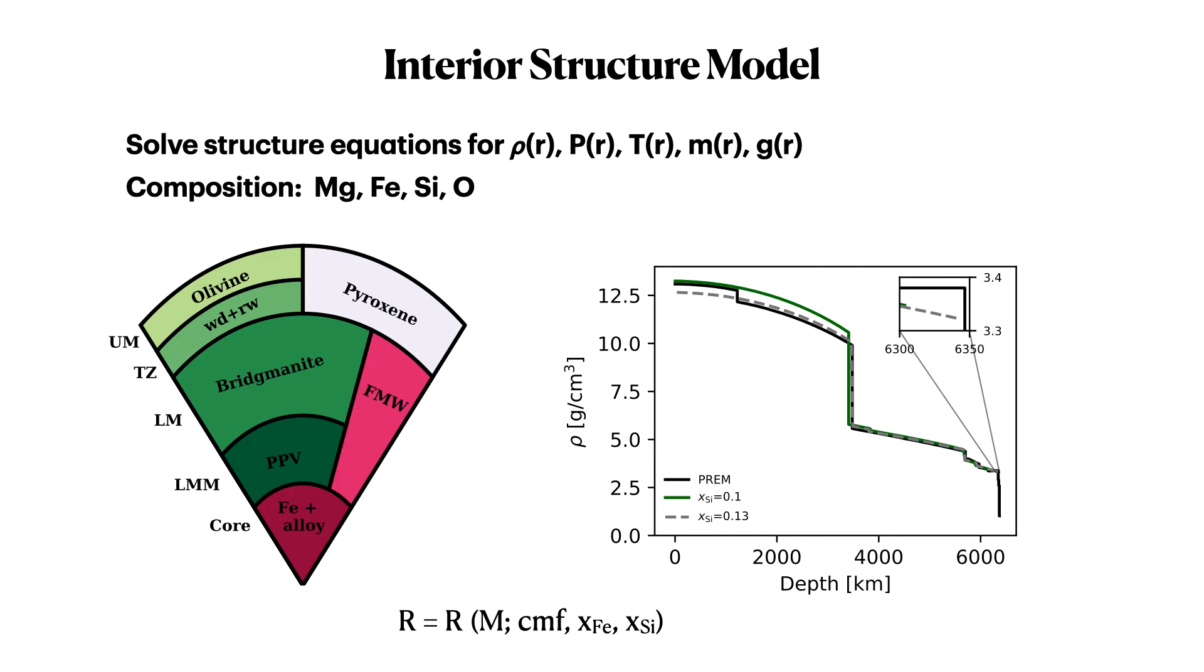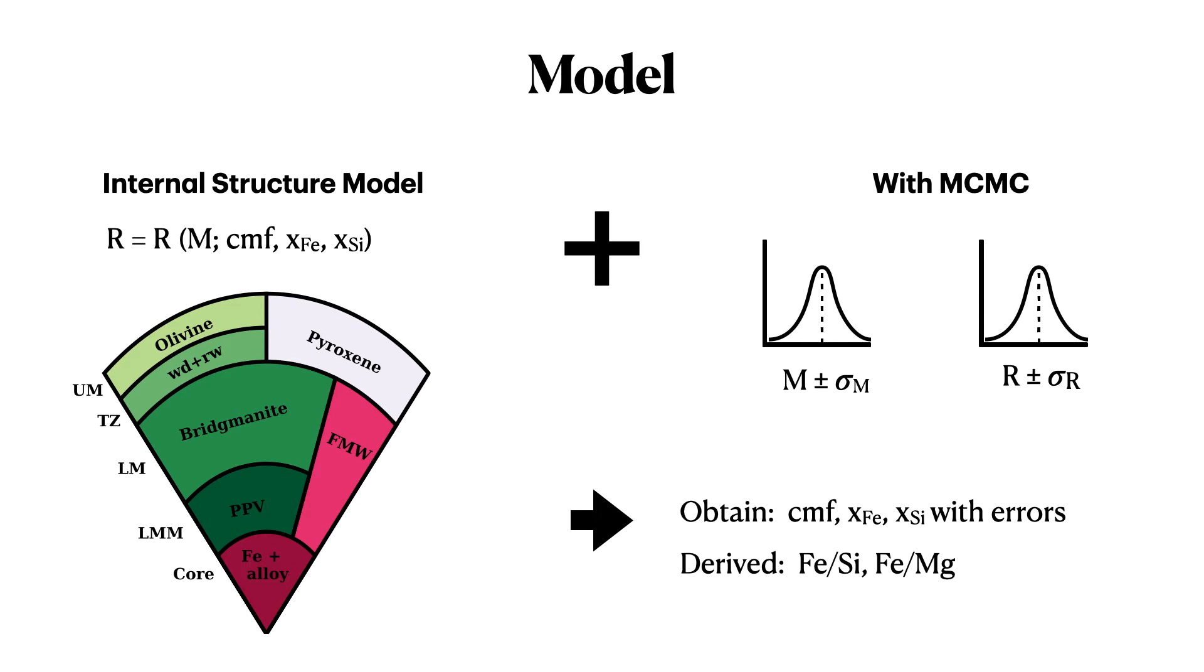And the parameters that we were interested in was the core mass fraction, how much mass was in the core, allowing the core to have some silica, that's the amount of silica in the core, and also allowing the mantle to have some iron. And these, we allow them to vary. And so having this internal structure model, we paired it with an MCMC code to constrain the composition for each planet in our sample, given the mass data and the radius data, including their error bars. And from that, we sampled all the parameter space and obtained what kind of composition in this terms of these parameters could fit the data, and derive from there the amount of iron to silica and iron to magnesium ratio.